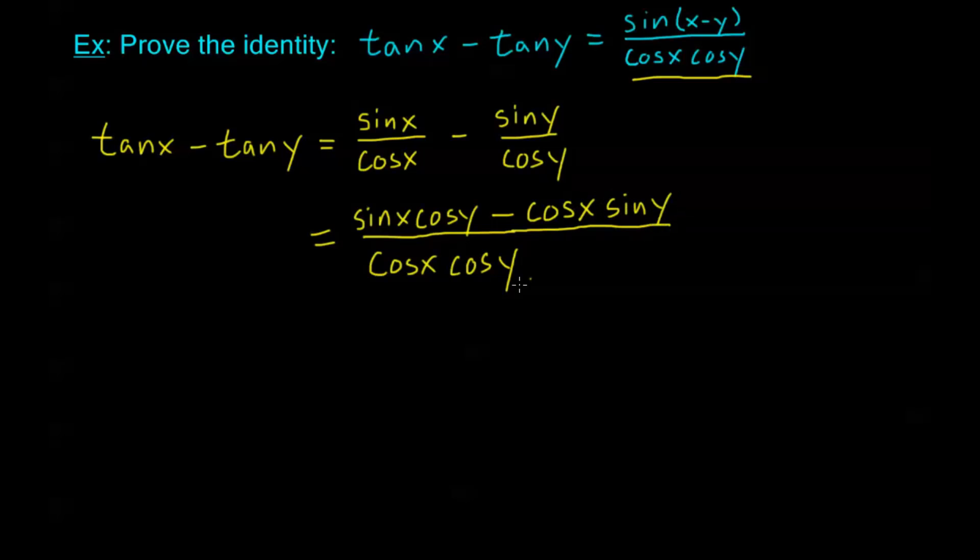And then this second term, I've multiplied the top and the bottom by cosine of x to get that common denominator. So this is cosine x, sine y, and here we see sine x cosine y minus cosine x sine y. This is exactly our subtraction formula for sine of x minus y. And our denominator, we still have cosine x, cosine y, exactly what we were looking for. So we're all done.